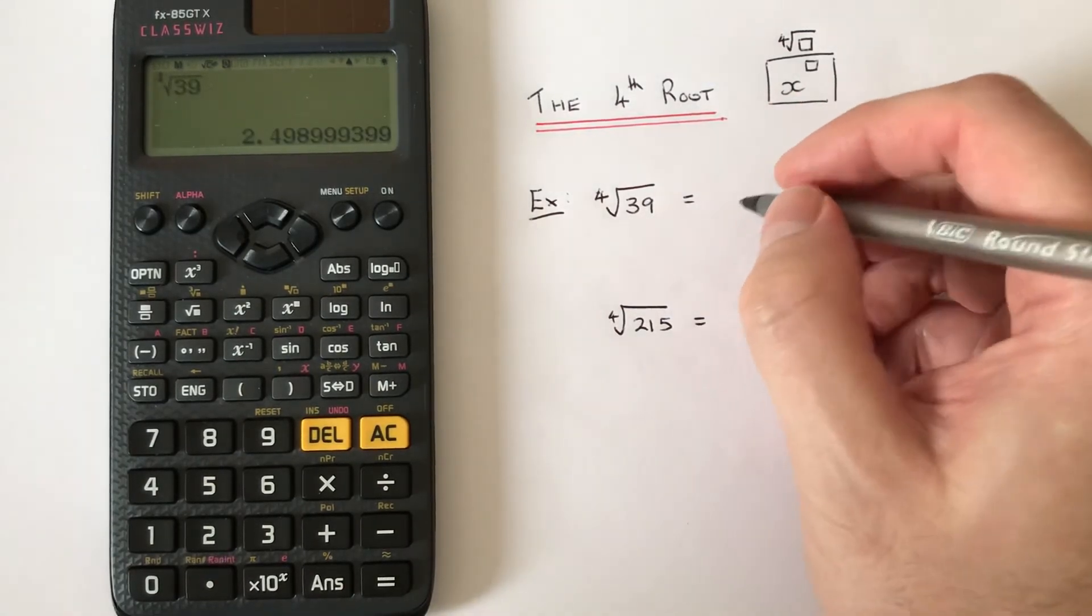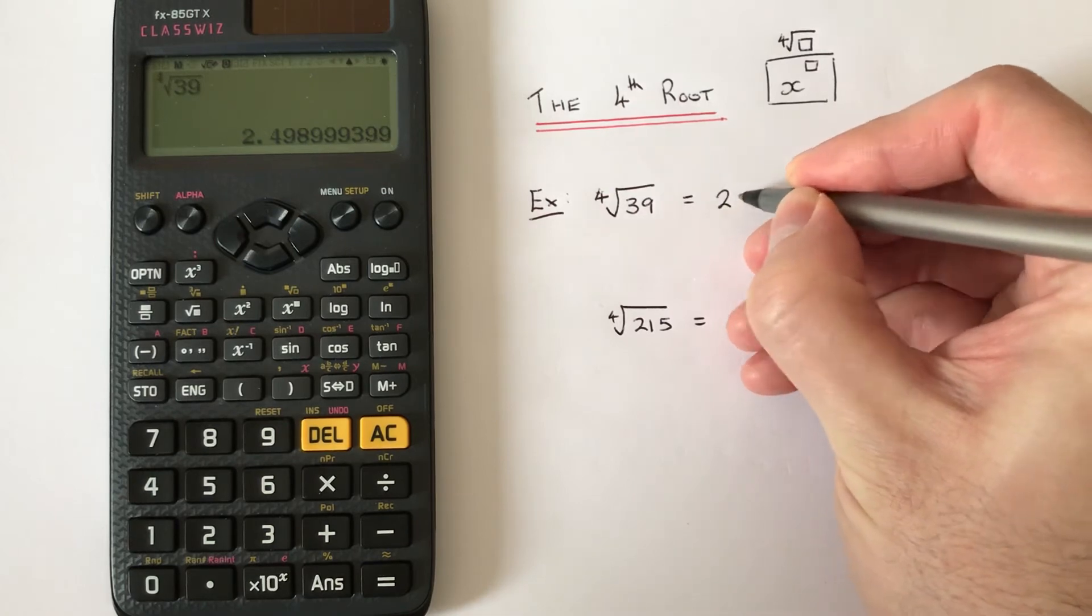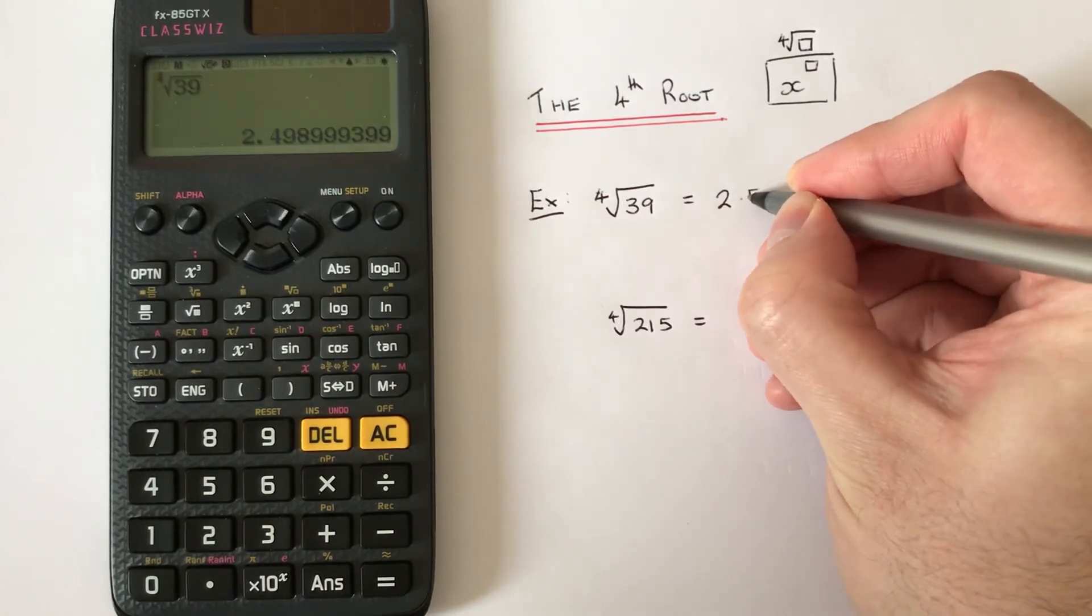Let's round this one off to two decimal places, so we get 2.50.